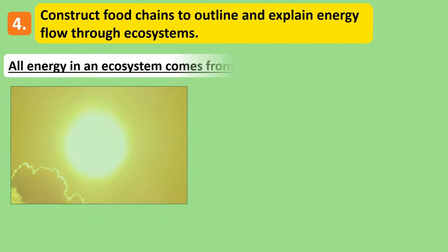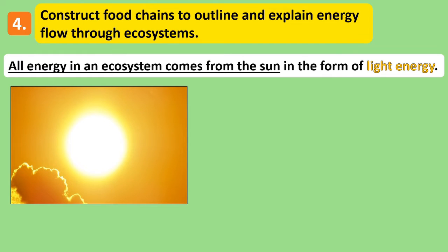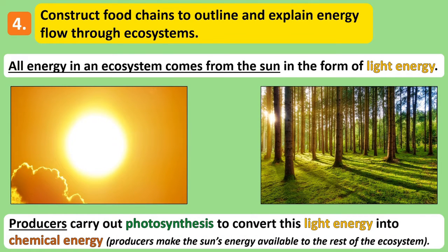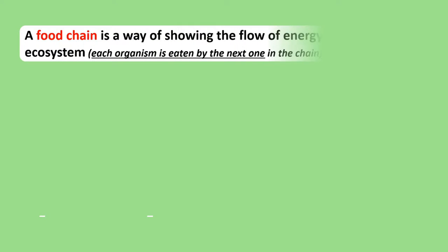You need to be able to outline how energy enters an ecosystem for living things to use. The sun provides an ecosystem with all of its energy in the form of light energy. Producers in the ecosystem carry out photosynthesis, and this converts the sun's light energy to chemical energy within the plant. The chemical energy in the plant is then available for animal consumers in the ecosystem to acquire by eating the plant. We use something called a food chain to describe this energy flow through organisms in an ecosystem.